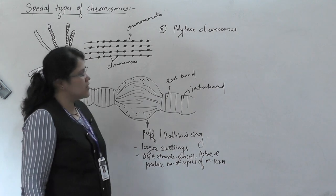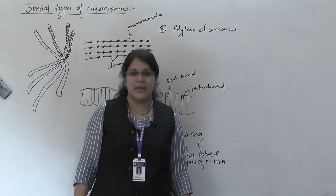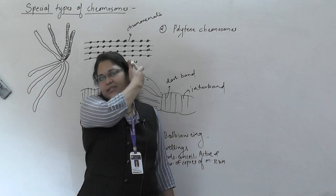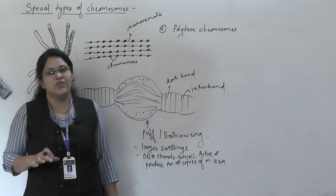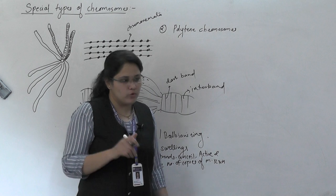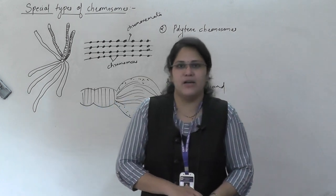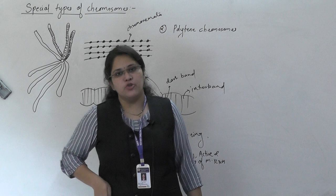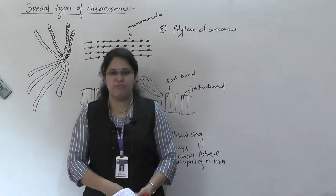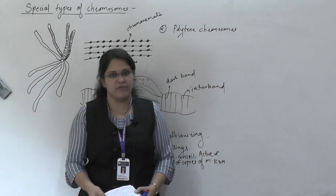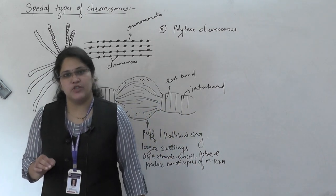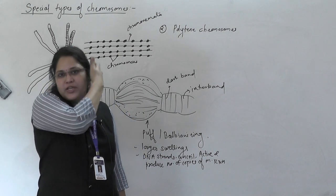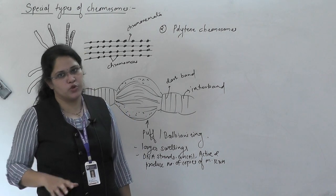These polytene chromosomes again function to increase the rate of protein synthesis. These two — lampbrush chromosomes and polytene chromosomes — are the special types of chromosomes. Questions rarely come on this part, but you should know these two important points.